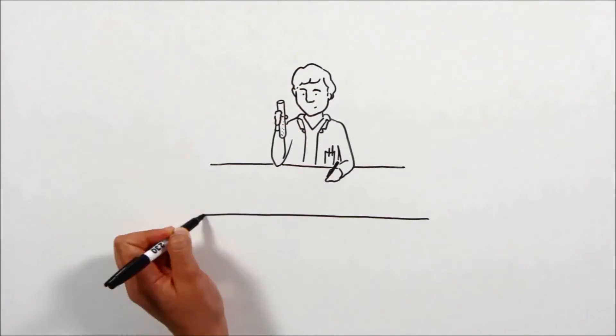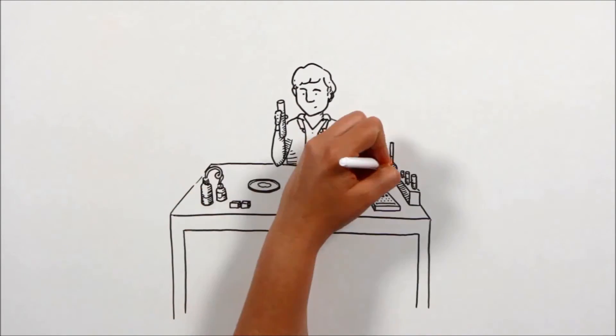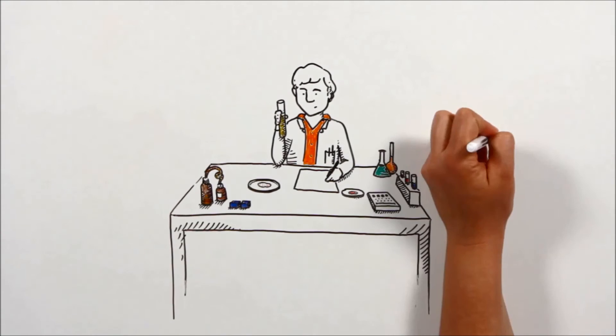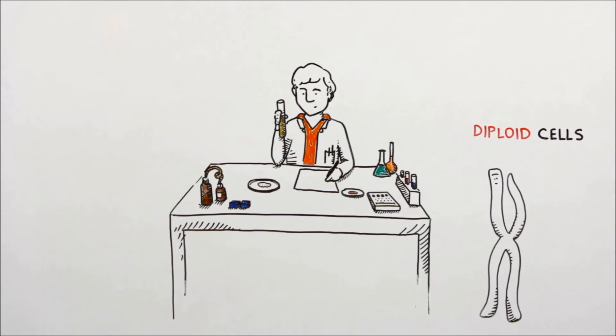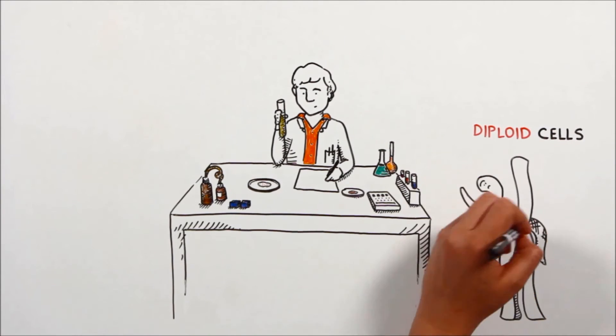A huge advantage of haploid human cells is that it is much easier to edit their genes. In diploid cells, detecting the biological effects of a single copy mutation is difficult because the other copy is normal and serves as backup.